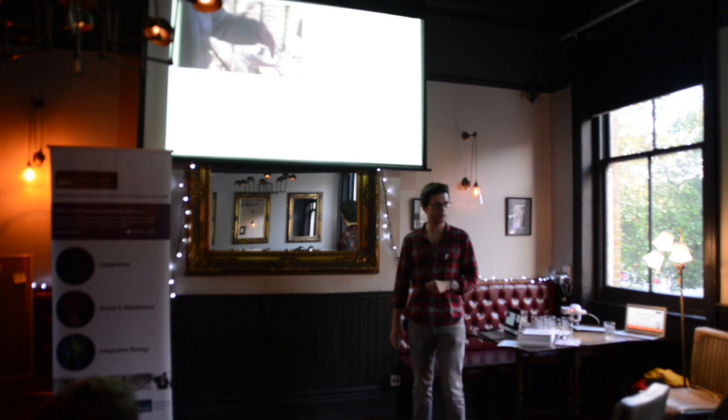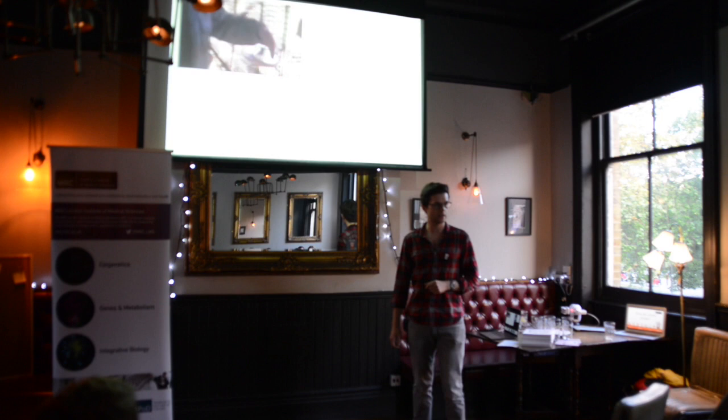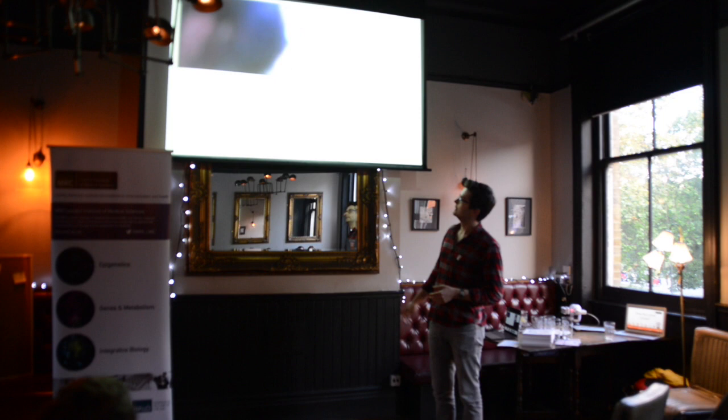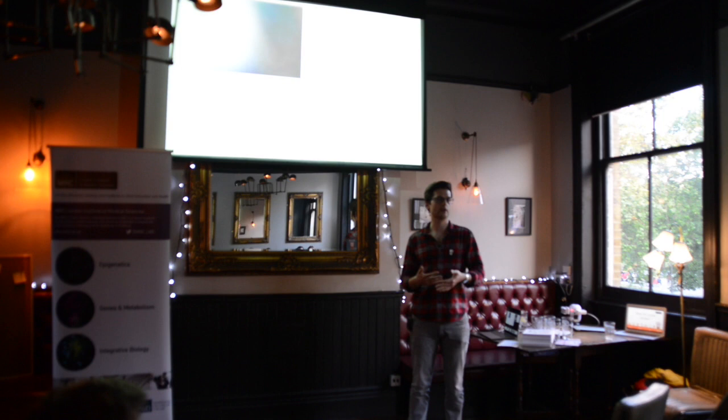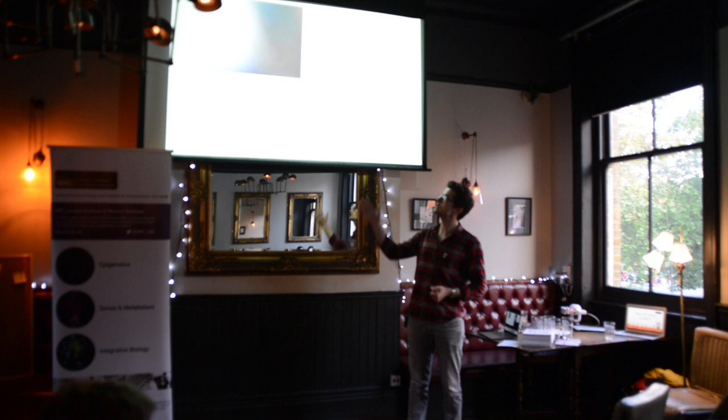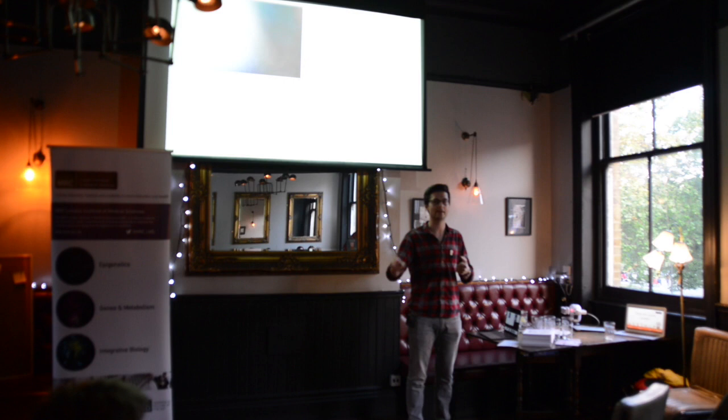This is from a BBC documentary — this is the Arctic fox selection experiment, and it's been going on for about 50 years. These are the aggressive foxes. For 50 generations of foxes, they would select the foxes that were least comfortable with humans approaching them. You just do that every year for 50 years, and eventually you get foxes that can't contain themselves — a human hand nearby is enough to make them try to bite it.